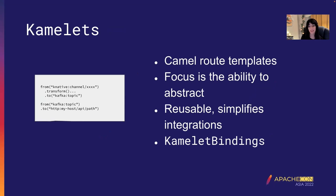A few years ago, there was an initiative to create a level of abstraction over Camel routes to hide the complexity of building integrations. The motivation was that higher-level users can get confused by the sheer number of parameters and configuration requirements. As a remedy, Kamelets were created and released as part of Camel K. Kamelets are essentially Camel route snippets — a template of a Camel route — focused on reusability and simplicity. Kamelets kind of force you to keep it simple, and one best practice for integrations is to build more smaller ones rather than letting large ones grow out of control.